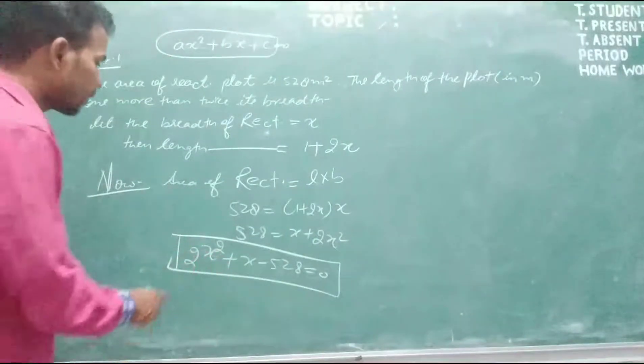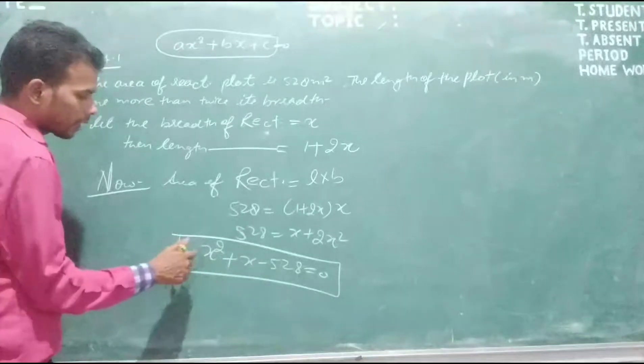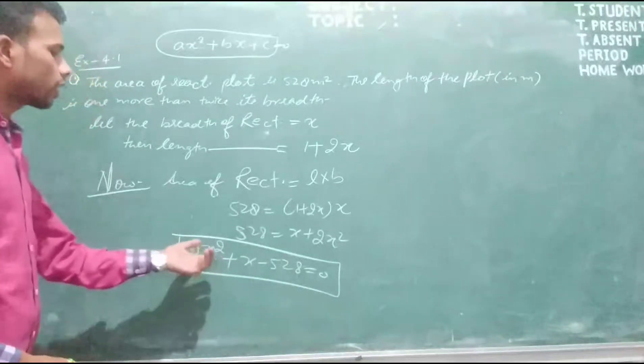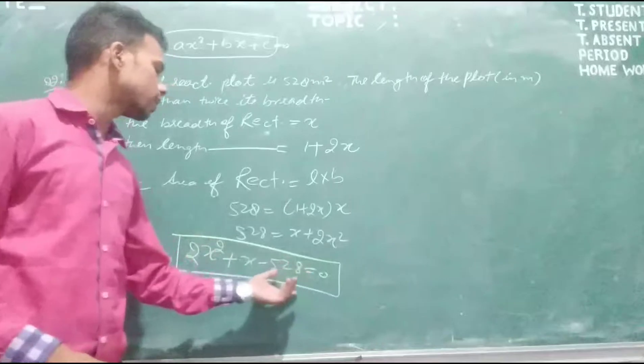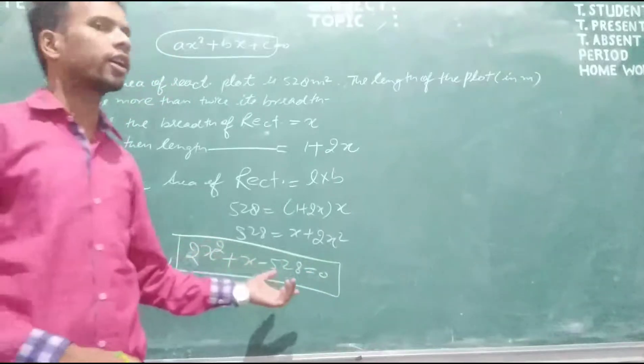Because here we have X square, and the highest degree is 2, so we can say this equation is in the form of a quadratic equation.